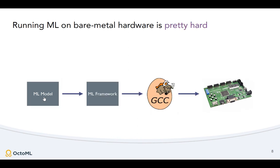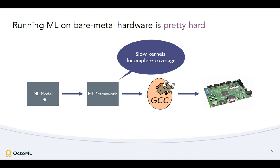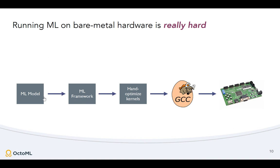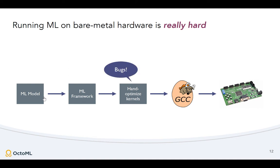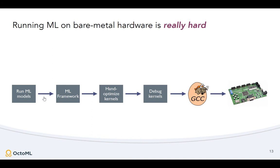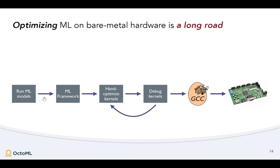There are ML frameworks starting to come out, like TensorFlow Lite Micro, which is a really exciting effort. But you start using it and realize you're hitting reference kernels that haven't been optimized for your particular platform or use case. And maybe it doesn't have some of the operators you care about — Hamiltonian embeddings or sparse transformers. So you end up writing and hand-optimizing your own kernels. You're not getting much help from the framework. You start hitting bugs, you have to debug the kernels, and then the next generation of your product switches hardware — so you go back and optimize kernels again. It's a long road, and it's not where we want to be.